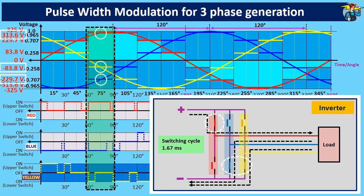So, to get the positive value of 313.6 volts for the red phase line during this particular switching cycle, you need to have a 96.5% duty cycle for the upper IGBT switch, and the pulse width is 1.61 milliseconds.